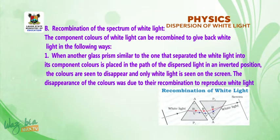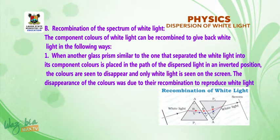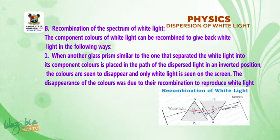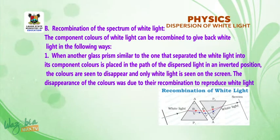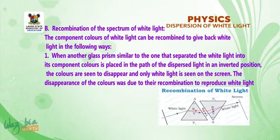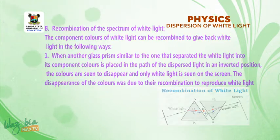Second, recombination of the spectrum of white light. The component colors of white light can be combined to give back white light in the following ways. One, when another glass prism similar to the one that separated the white light into its component colors is placed in the path of the dispersed light in an inverted position, the colors are seen to disappear and only white light is seen on the screen. Disappearance of the colors was due to their recombination to reproduce white light.